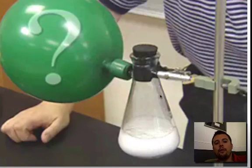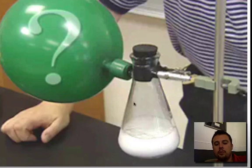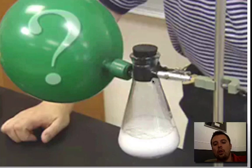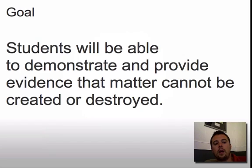When you react two chemicals together and you get some sort of gas given off, this lab setup shows you that if you can capture it with a balloon or by the lid of a container, you'll ensure that no mass escapes, therefore showing the Law of Conservation of Mass. When you have a chemical reaction, no mass, no matter, and no energy can ever be created or destroyed.